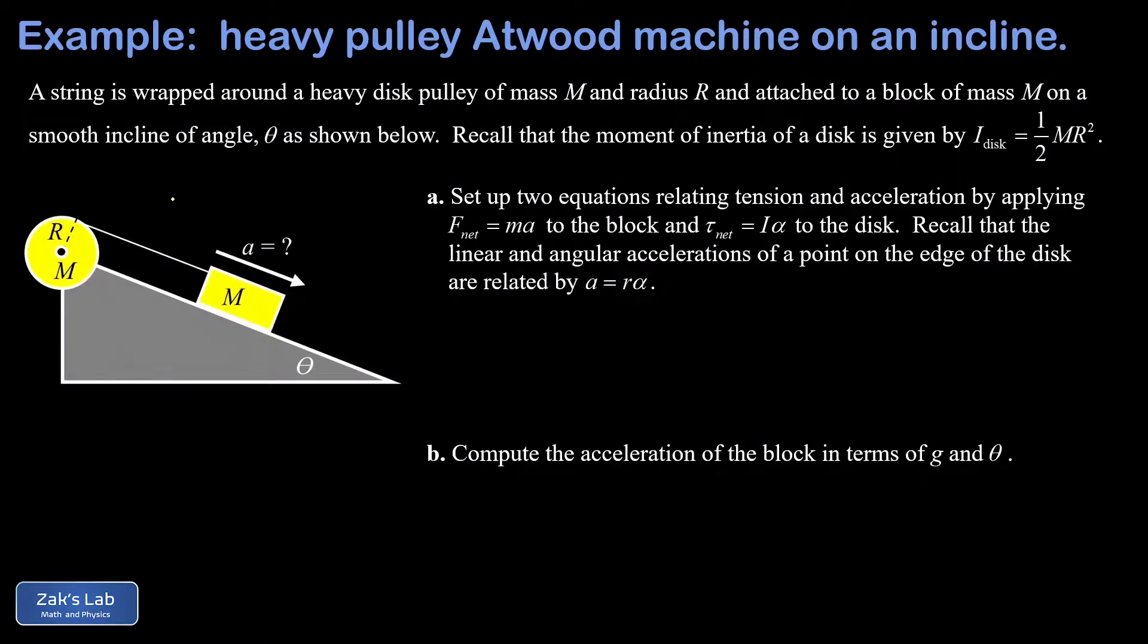In this video we're looking at an Atwood variant where the pulley is heavy. I have a mass sliding down a frictionless incline connected to a string wrapped around a heavy pulley with mass M and radius R. As that mass slides down the incline, it's unwinding the pulley, but remember the pulley has some inertia now, so that slows things down. We're reminded in the problem that the formula for the moment of inertia of a disc is one half MR squared.